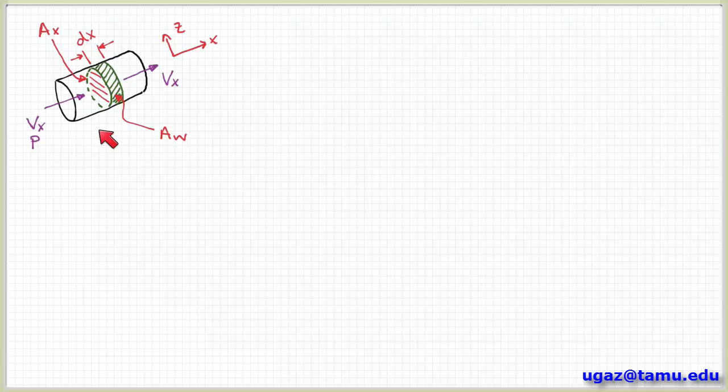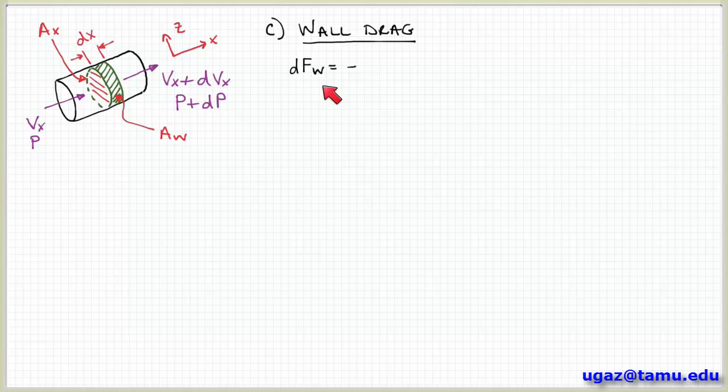So we took care of the pressure force. We took care of the gravity force. And now we're going to look at a third force that could be acting here on the system. And that force is due to wall drag. And so let me just redraw the system and this section of pipe here.